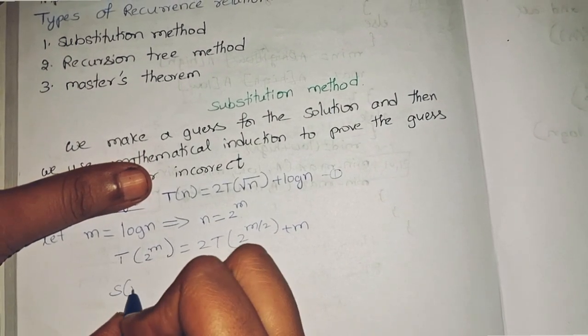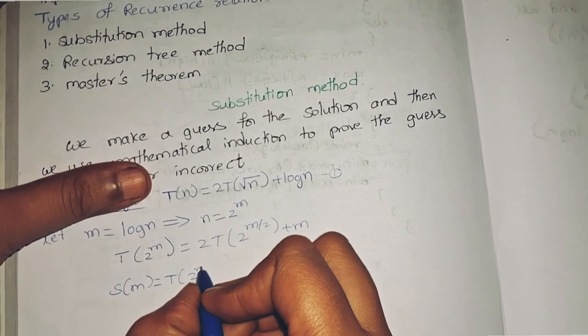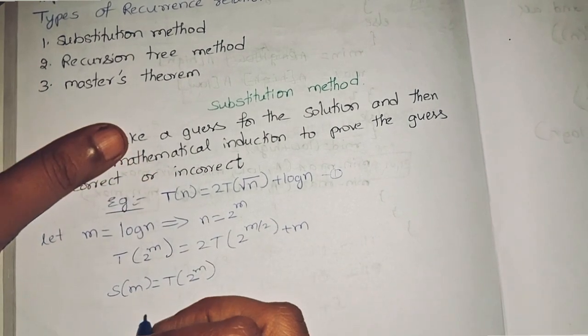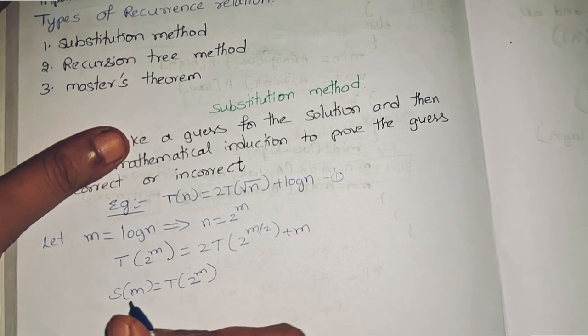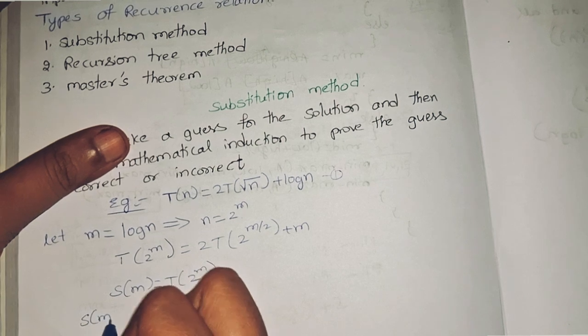So now s(m) = T(2^m). Now we will substitute the s(m) here, so s(m) equals...